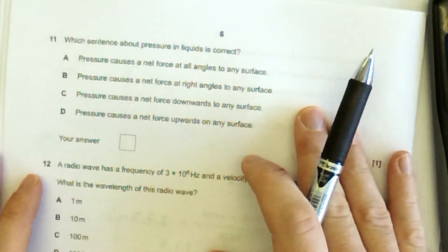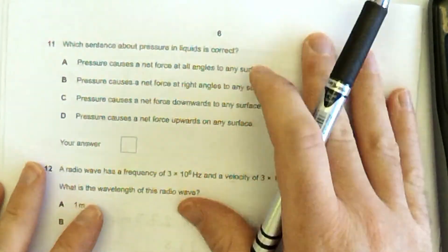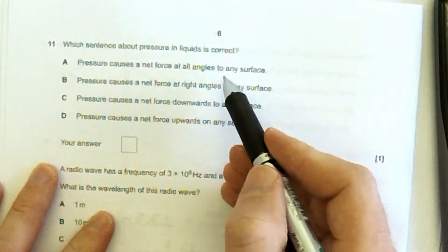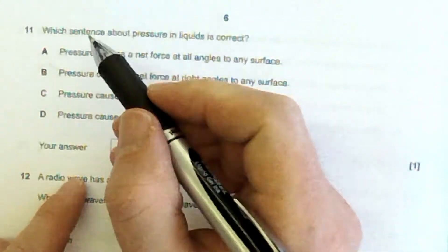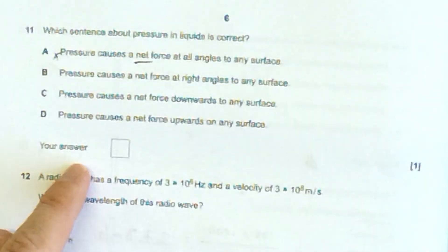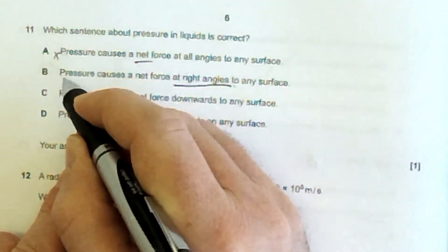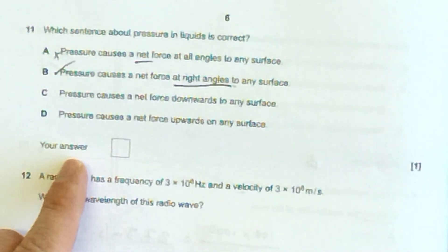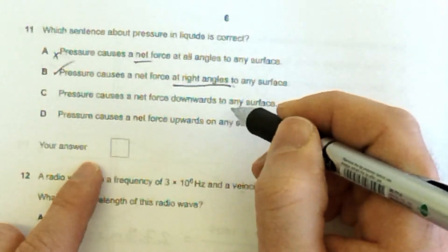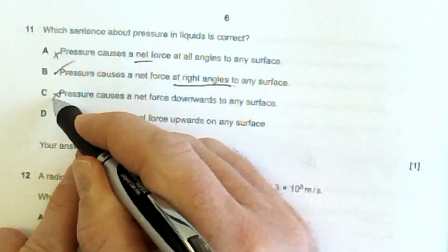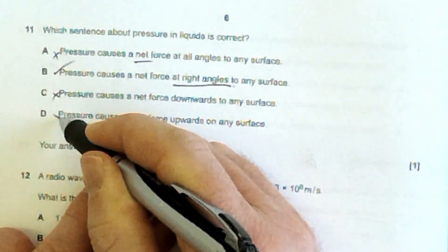Which sentence about pressure and liquids is correct? Pressure causes a net force at all angles to any surface. That's not really the case. It does cause forces at all angles, but the overall force can be said to be acting at right angles. So B seems okay for now. Pressure causes a net force downwards. No, pressure is in all directions. Pressure causes a net force upwards. No.